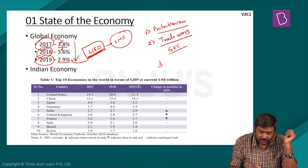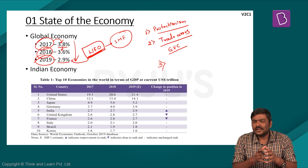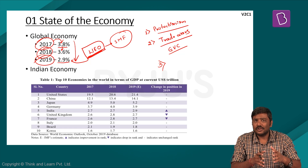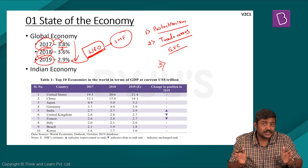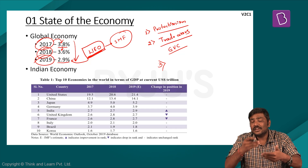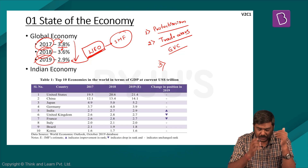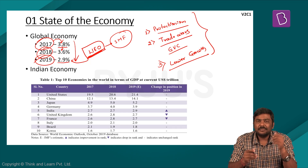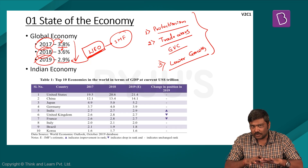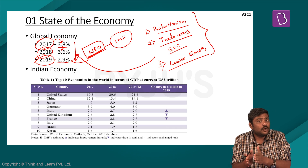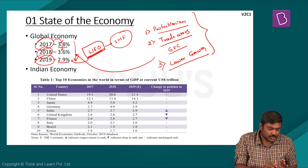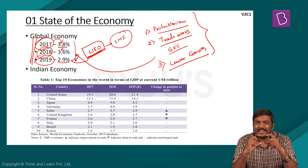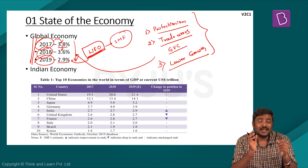The third reason is the natural outcome of the first two. When GVC gets disrupted, when trade wars impact not only the two main countries but other trading partners as well, and when trade protectionism increases, this leads to lower growth rates in developed economies. And when developed economies register lower growth rates, the global economy also gets affected. So these are some of the reasons why the global economy has been experiencing a slowdown.